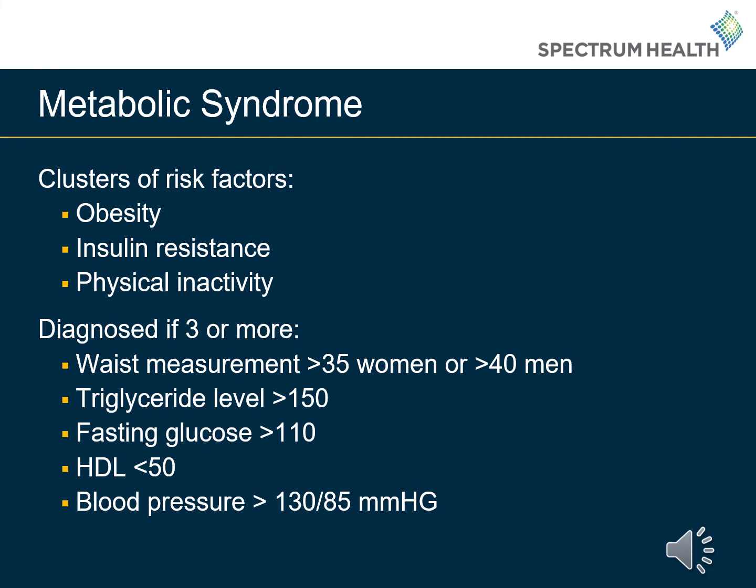Metabolic syndrome is a cluster of risk factors, including obesity, insulin resistance, and physical inactivity. Metabolic syndrome may be diagnosed if you have three or more of the following: a waist measurement greater than 35 inches for women or 40 inches for men, triglycerides greater than 150, a fasting blood sugar greater than 110, an HDL less than 50, or a blood pressure greater than 130 over 85. According to the American Heart Association, individuals with metabolic syndrome have a two-fold increase in risk for heart attack or stroke, and a five-fold increased risk for developing diabetes compared to individuals who do not have metabolic syndrome.